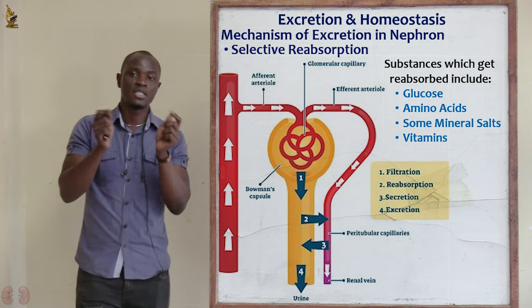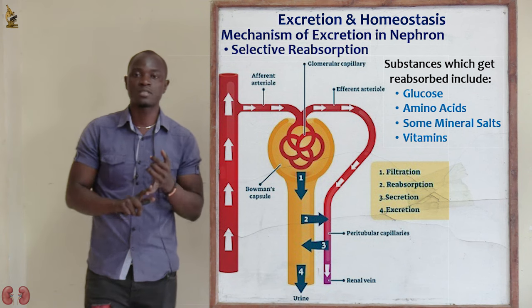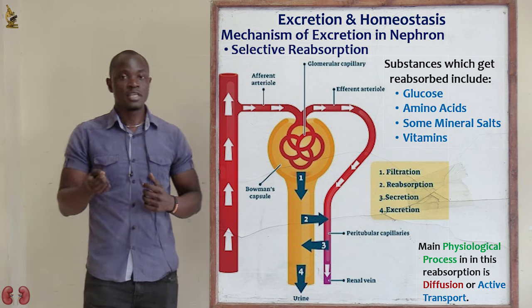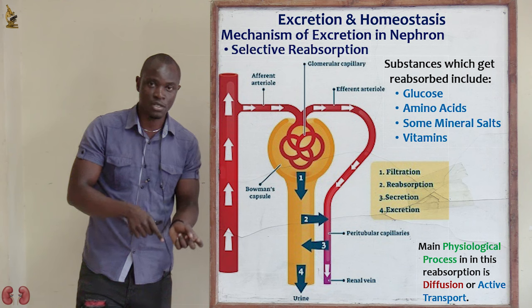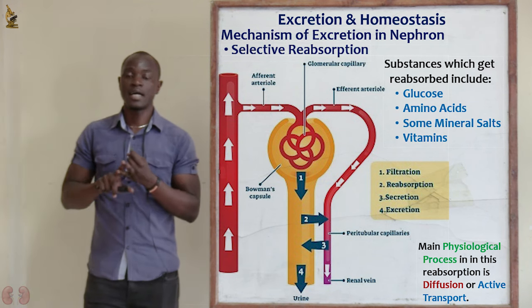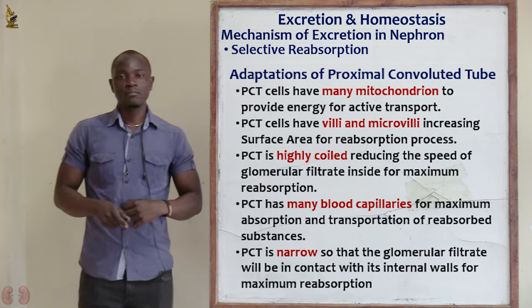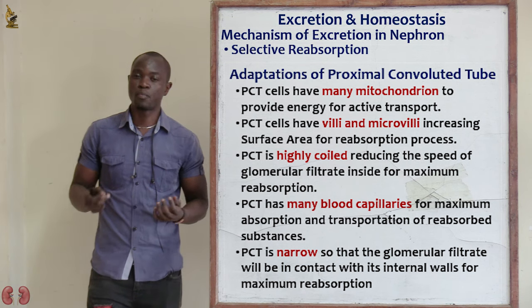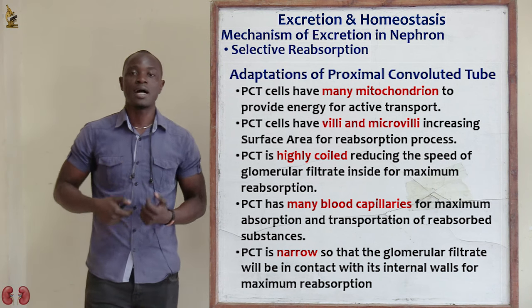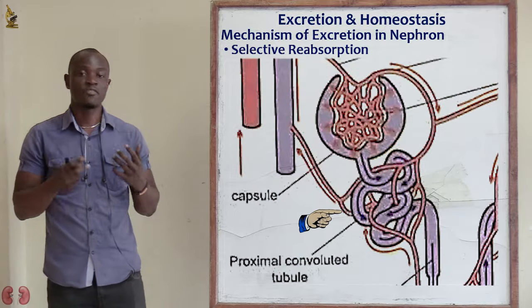Water is not reabsorbed by the proximal convoluted tube. It is only glucose, some minerals, some vitamins, and amino acids that are reabsorbed back — but not water molecules. These substances are reabsorbed back into the bloodstream by either diffusion or active transport. The cells lining these tubes have numerous mitochondria to produce energy for active transport. They are also densely packed with microvilli, which increases the surface area for reabsorption.